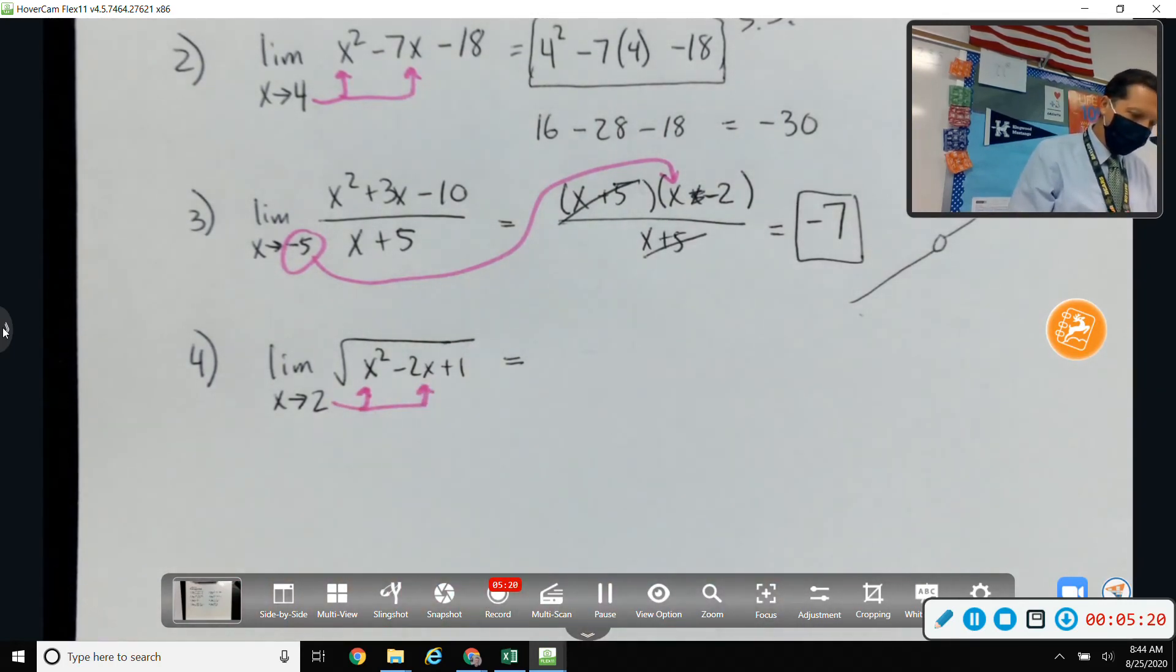Number 5. Limit as x approaches negative 1 of the absolute value of x minus 9. Okay, weird, but I'll just substitute and get 10. So, nothing crazy about that one.